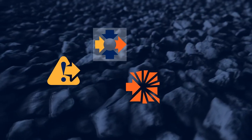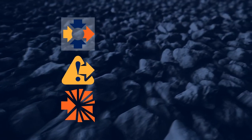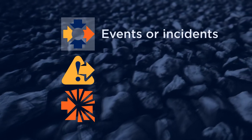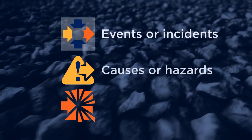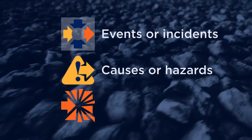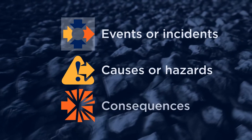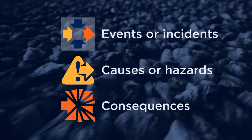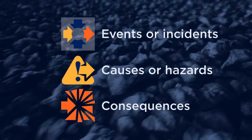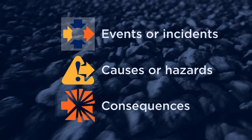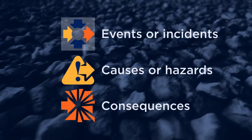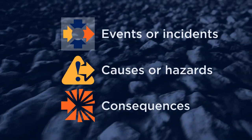When working through a risk assessment, you generally start by identifying the events or incidents before working out what the causes or hazards may be, and if the event occurs, the subsequent consequences. This is the sequence used in Statue, and it's a logical and intuitive process for building a risk assessment.